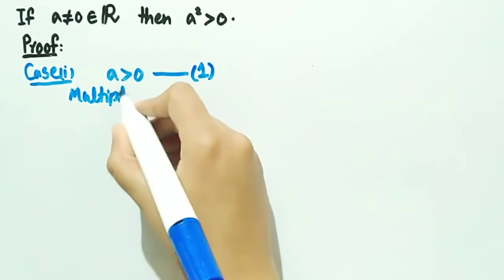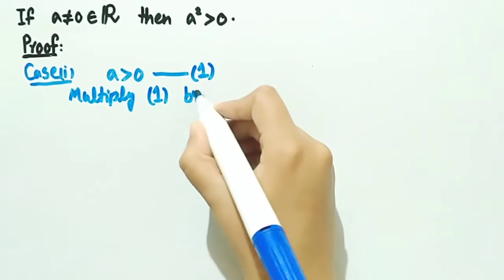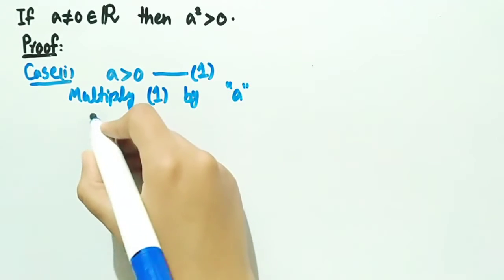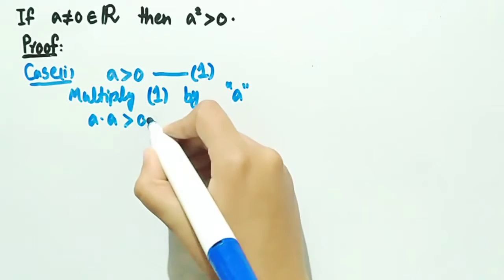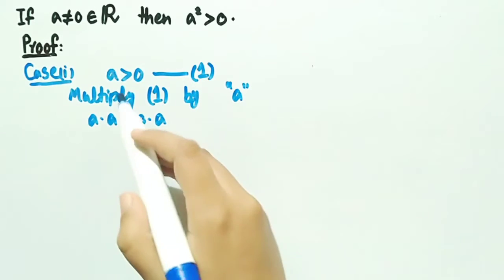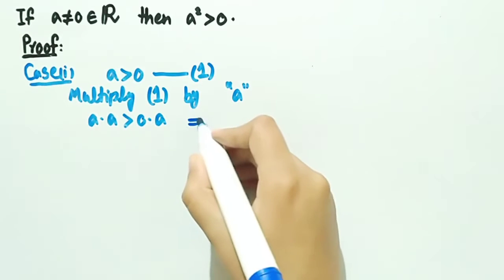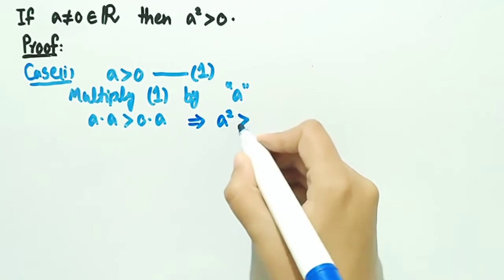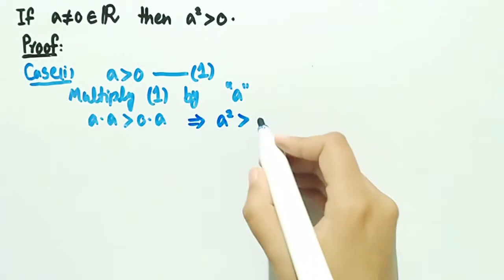Multiply equation 1 by a. We get a multiplied by a greater than zero multiplied by a. The inequality will remain the same since we have considered a as a positive real number. So the inequality will not change and we get a square greater than zero. Whenever zero is multiplied by any real number, we get zero.